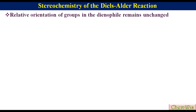The relative orientation of groups in the dienophile remains unchanged during the course of the Diels-Alder reaction. This means two groups which are cis in the dienophile will remain cis, while those which are trans will remain trans in the Diels-Alder product.